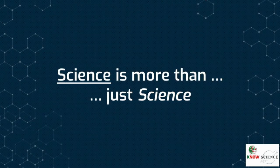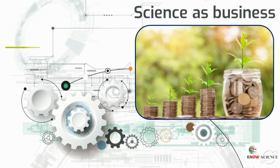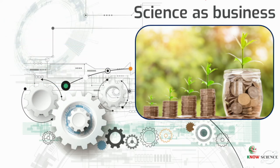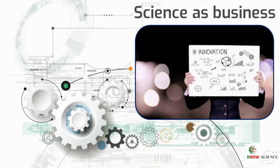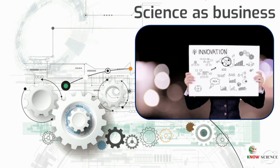Modern science is not only a way to produce knowledge — it is also science as business. Science is now included within a large system for monetizing intellectual property, from publishing platforms to the increasing desire to make commercial success of academic research. The internet, biotechnology, space exploration, and many other industries are research-centric, so science is their key goal. Science-to-business marketing aims at the use of marketing principles to support the successful commercialization of research competencies, capacities, and results from research institutions to their customers.